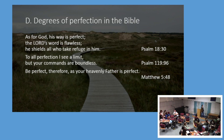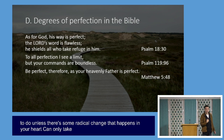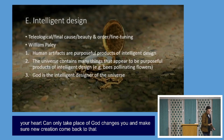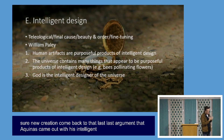'To all perfection I see a limit, but your commands are boundless.' God is the ultimate pinnacle of perfection. Jesus says: 'Be perfect, therefore, as your heavenly father is perfect.' Jesus's Sermon on the Mount is a radical manifesto for the kingdom of God — impossible to do unless there's some radical change in your heart, which can only take place if God changes you and makes you a new creation.